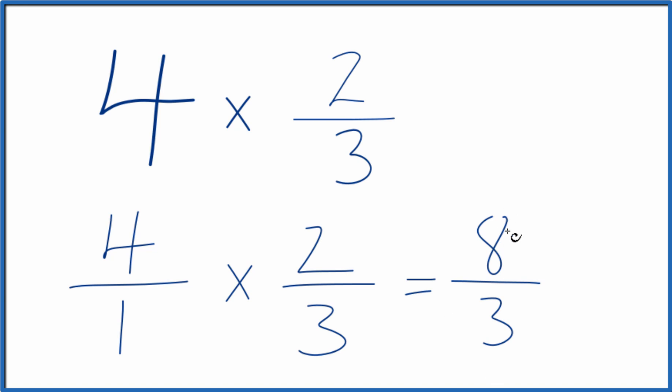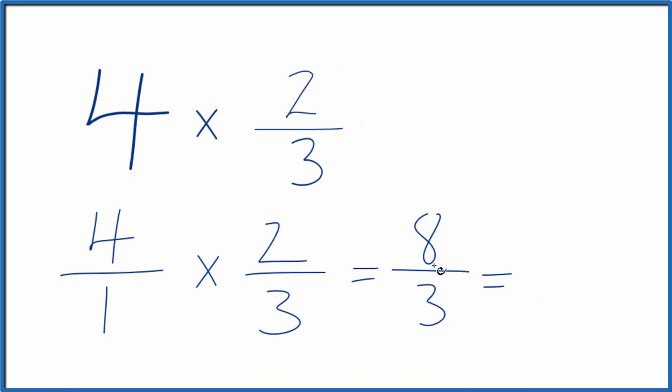This is an improper fraction because 8 is larger than 3. So we can change it to a mixed number. 3 goes into 8, 2 times 3 is 6, with 2 left over. So we could call it 2 and 2 thirds. That's the same value as 8 thirds.